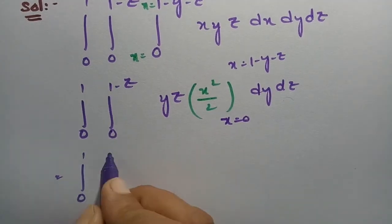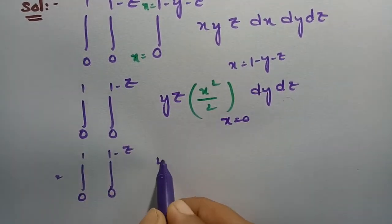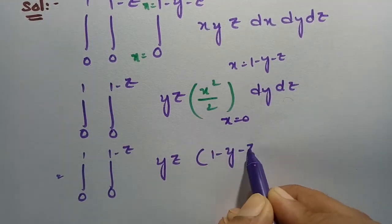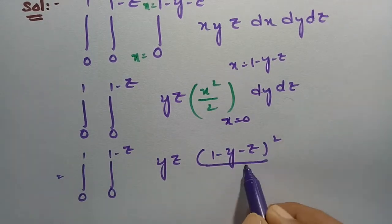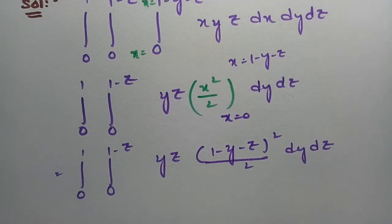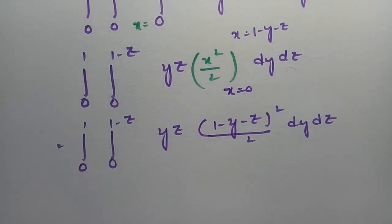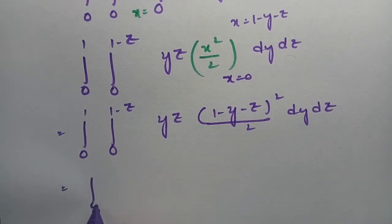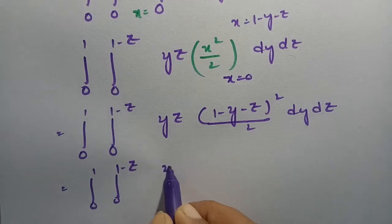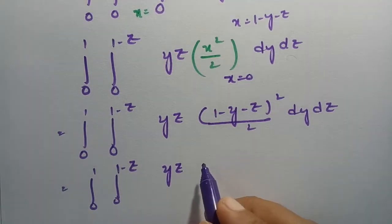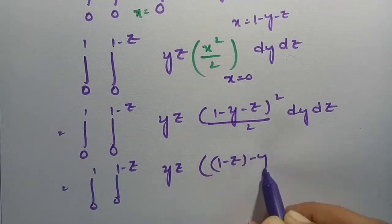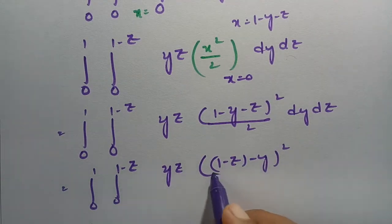Now I am going to substitute the x limits: integral 0 to 1, integral 0 to 1 minus z, this is yz and this will be (1 minus y minus z) squared by 2, dy dz. If you observe this, we have integral 0 to 1, integral 0 to 1 minus z, and this can be written as (1 minus z minus y) squared by 2, dy dz.